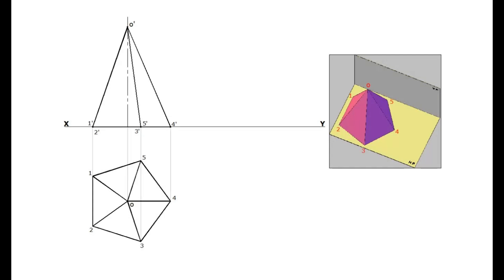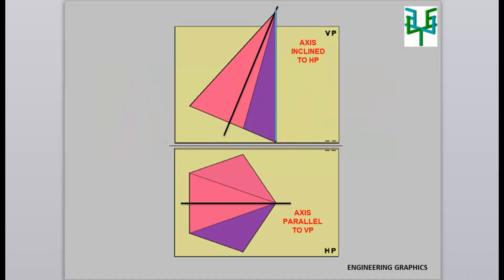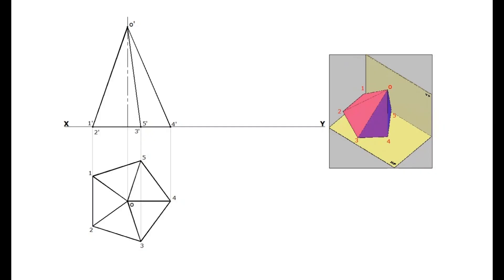In the actual condition, the pyramid is resting with a base corner, with one slant edge perpendicular to HP or ground. The edge 4 dash O dash at the right hand side is the slant edge with its true length. We can notice that this slant edge is parallel to VP and inclined to HP. So we have to tilt the pyramid until this slant edge 4 dash O dash becomes perpendicular to HP.